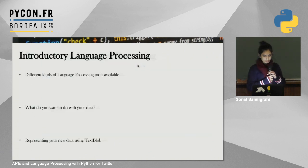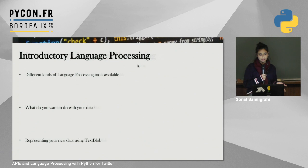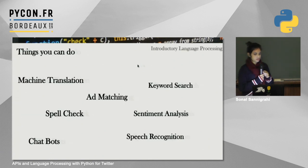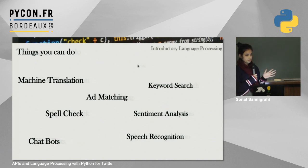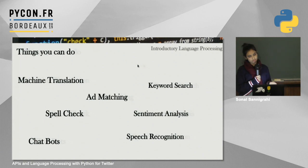Lastly, I'll talk about some introductory language processing. There are lots of different things you can do with it, including machine translation, spell checking, chat bots, ad matching, sentiment analysis, speech recognition, and keyword search, among many others.